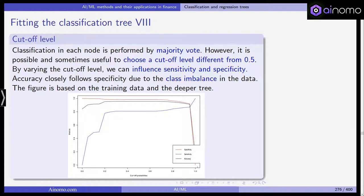The accuracy closely follows specificity due to the class imbalance in the data. This is shown on the training data in the deeper tree in this plot. You can see in red the specificity, in blue the sensitivity and black is the accuracy. If you take different cutoff probabilities, probably you shouldn't use 0 or close to 0 or close to 1. But as you can see, it's not constant for all these different cutoff probabilities, and there might be a choice that increases the accuracy or the sensitivity of your model.